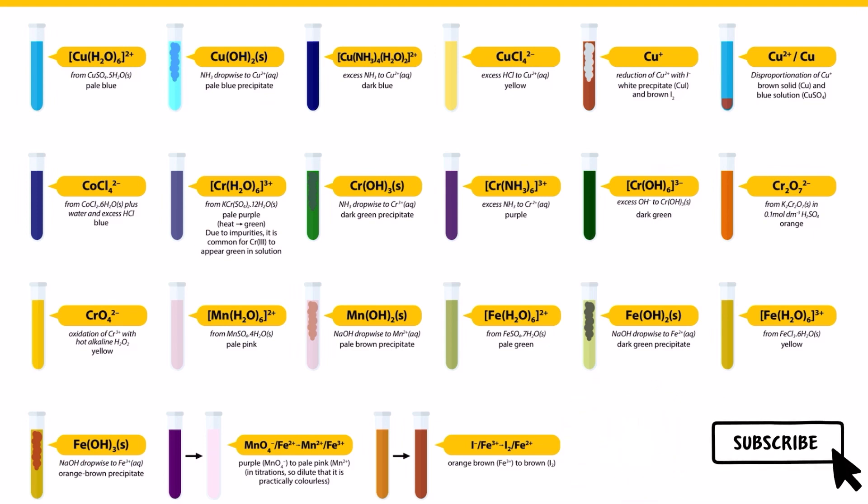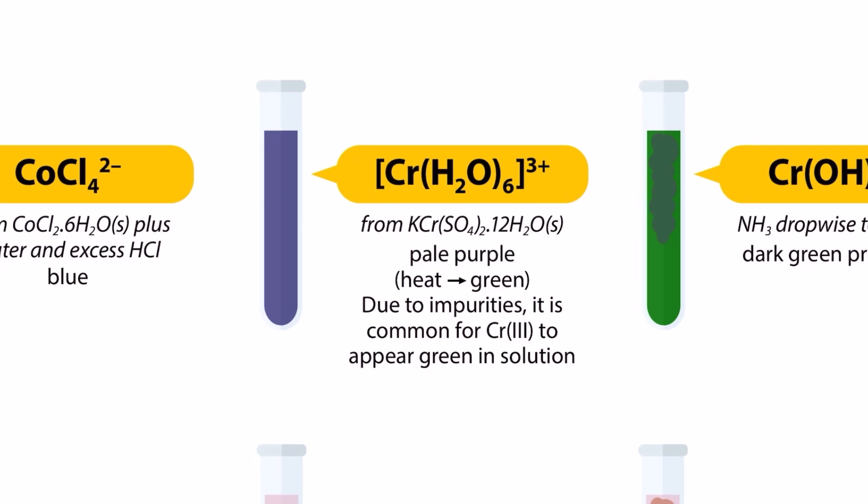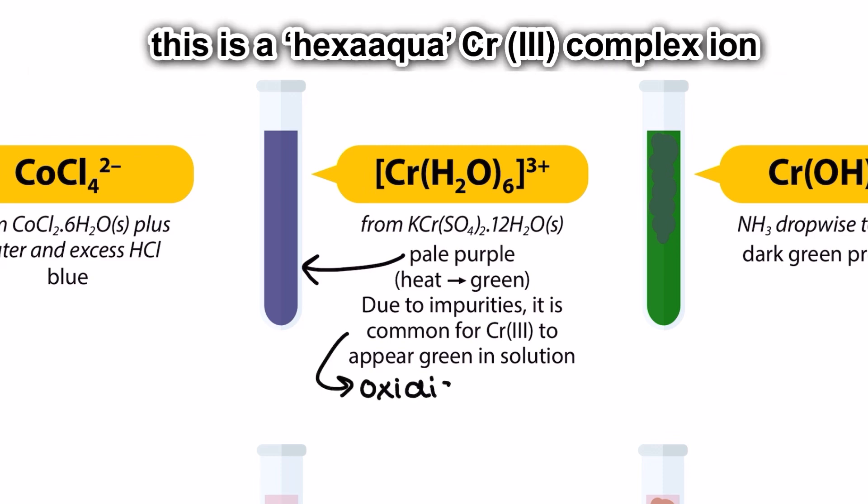I'll be giving each of the chromium substances here some context using reactions and providing general explanations of what we see happen cross-matched to your specification. We're starting off with this pale purple complex ion which can be formed when a soluble salt of chromium 3 is added to water and the chromium 3 plus ions form coordinate bonds with the water molecule ligands.